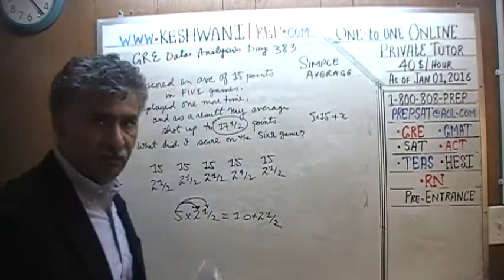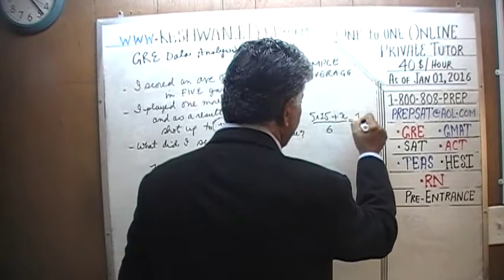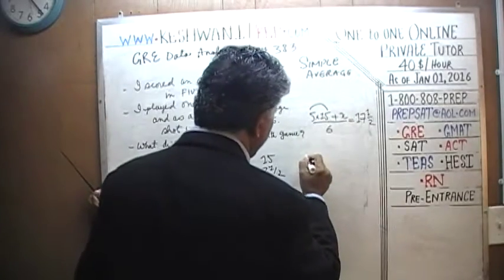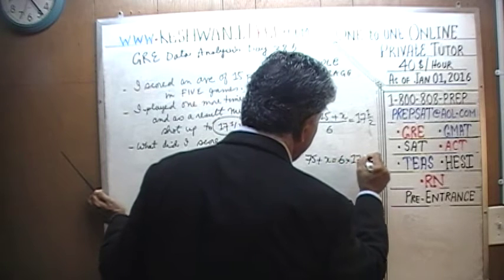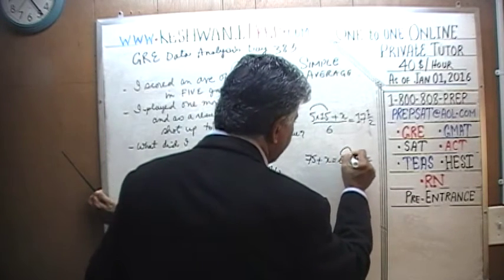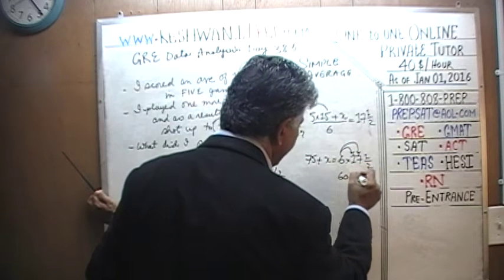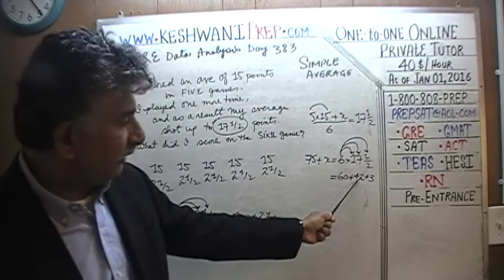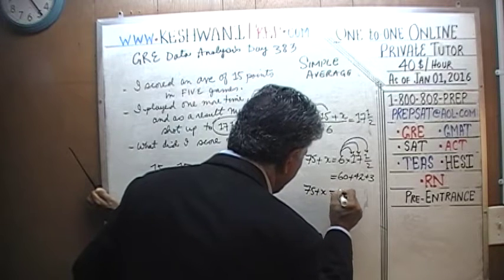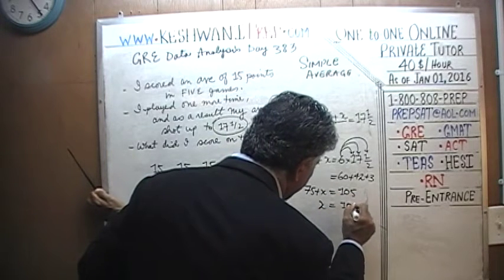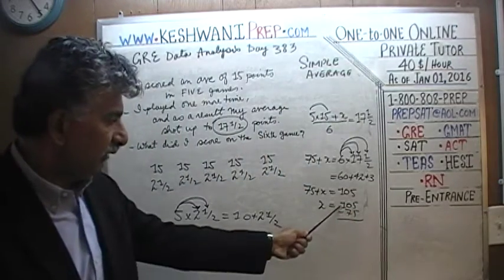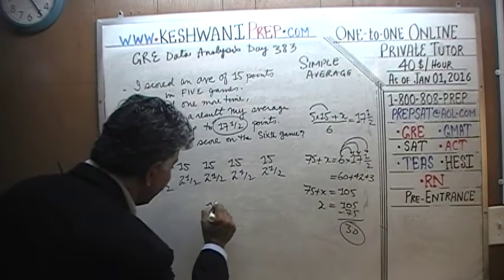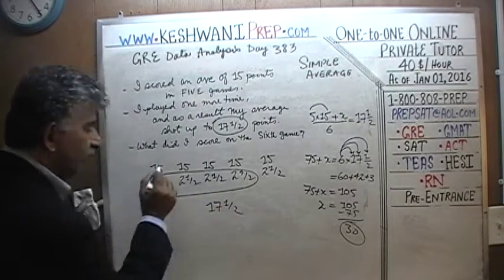He played one more game in which he scored X points. Over six games, his new average is 17 and a half. So the equation is: 75 plus X equals 6 times 17 and a half. Six times 17 and a half: 6 times 10 is 60, 6 times 7 is 42, and six halves is 3, giving 105. So 75 plus X equals 105, therefore X equals 30.